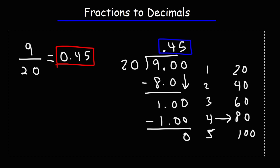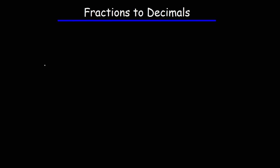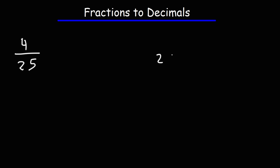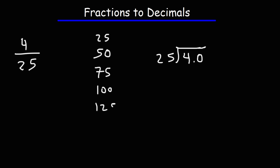Now let's try another example. Let's convert this fraction into a decimal: 4 over 25. Feel free to pause the video if you want to try it. Now 25 doesn't go into 4, so we need to add a 0. Now how many times does 25 go into 40? If you're not sure, you can make a list. The multiples of 25 are going to be 25, 50, 75, 100, and so forth.